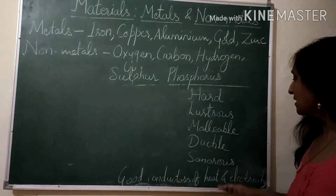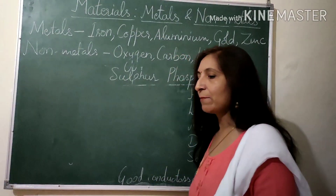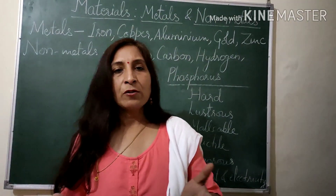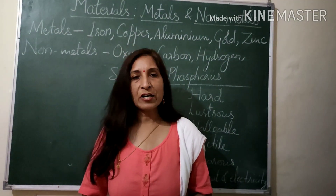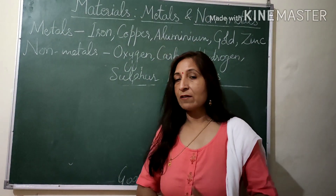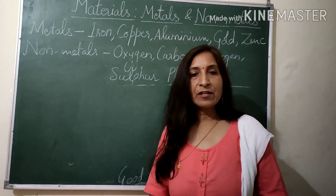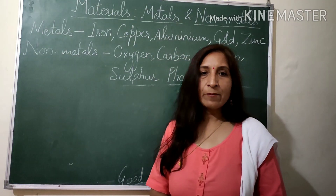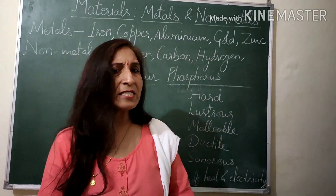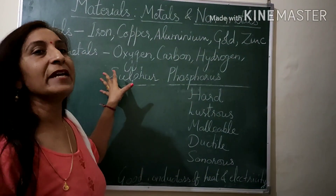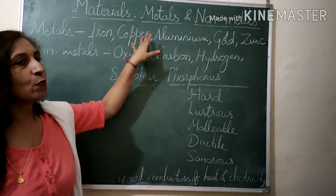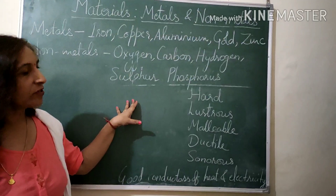The next property is ductility, by virtue of which metals can be drawn into thin wires. Copper and aluminium wires are used as electric wires. Gold and silver wires are used in making jewellery. Iron wires are used for making wire mesh, such as in windows, doors, and fences. Can we make any wire out of non-metals? No. So metals are ductile while non-metals are non-ductile.